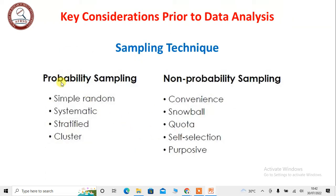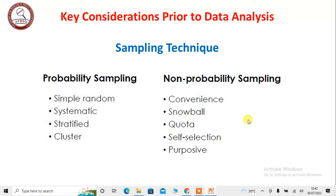Just for your review: we have two types of sampling techniques. One is probability sampling technique, another is non-probability sampling. In probability random sampling, we have simple random, systematic, stratified and cluster sampling. Non-probability sampling includes convenience, snowball, quota, self-selection and purposive sampling.